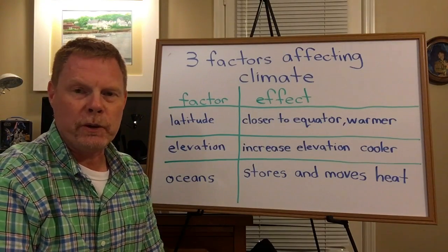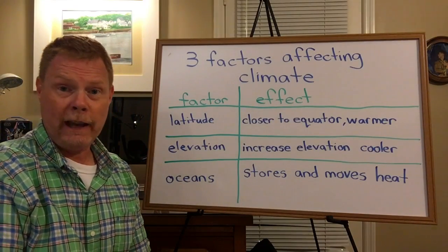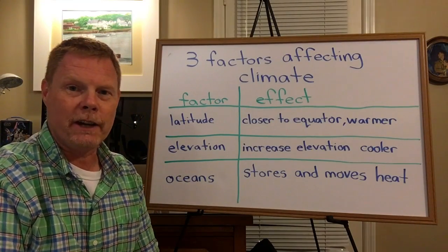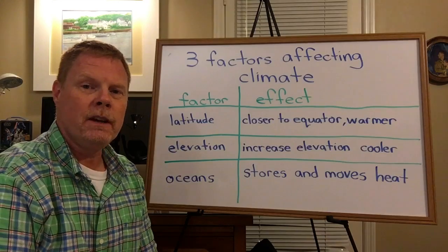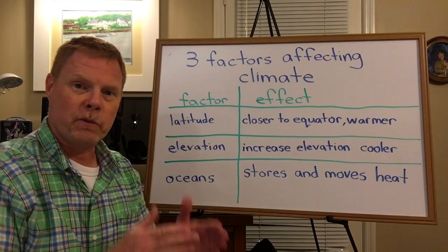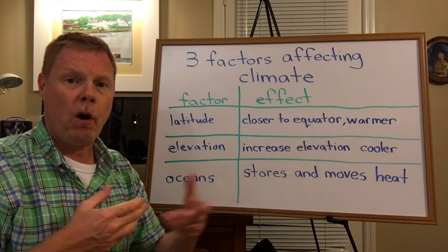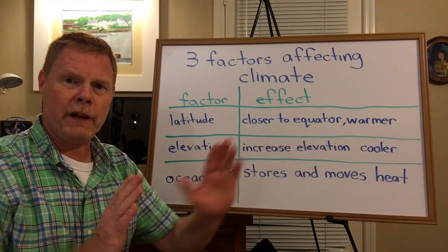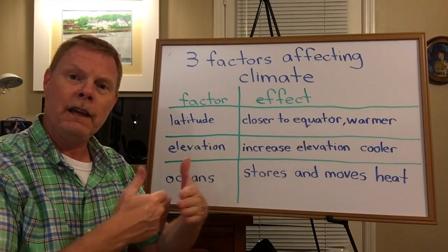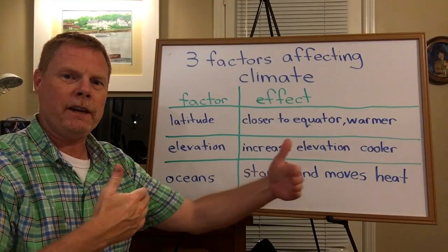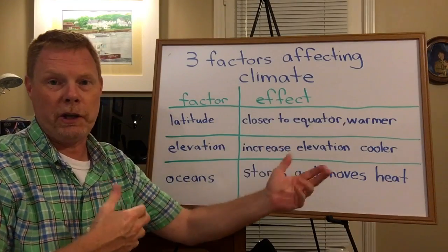There are three factors that affect the climate of an area on the earth. Climate is the weather over a long period of time all year round — not just day-to-day, but how that area is all year.